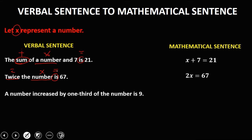Next: 'A number increased by 1/3 of a number is 9.' So 'a number' is x, 'increased by' means plus, then '1/3 of' means multiplication, and 'the number' is x again. 'Is' means equal. So in mathematical sentence: x + (1/3)x = 9.